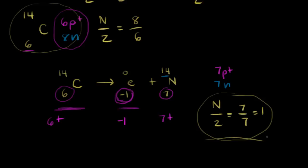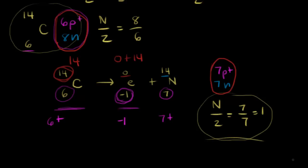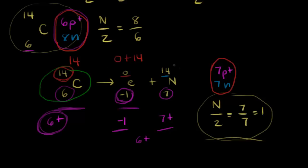Looking at more details of the nuclear equation: the number of nucleons is conserved. We have 14 nucleons on the left — six protons and eight neutrons — and 14 nucleons on the right — seven protons and seven neutrons. An electron is not a nucleon, so nucleons are conserved: 14 on the left, zero plus 14 on the right. Charge is also conserved: six positive charges on the left; on the right, negative one plus seven positive gives plus six. Notice we changed the identity from carbon to nitrogen by changing the number of protons — from six to seven. That's the idea of transmutation: changing one element into another.